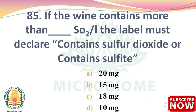Next question: if the wine contains more than dash sulfur dioxide per liter, the label must declare 'contains sulfur dioxide' or 'contains sulfite' — options: 20 mg, 15 mg, 18 mg, 10 mg. The right answer is Option D: 10 mg.